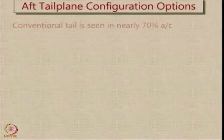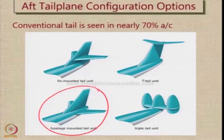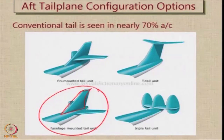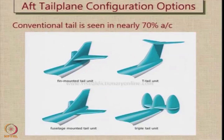Now let us see what kind of options we have. The most common configuration is called the conventional configuration. In this configuration, you have a dedicated single vertical tail of adequate size and two horizontal tails, all three attached to the rear of the fuselage. Nearly three out of four aircraft you will see would have this kind of tail configuration. But there are some variations, which normally come when this part of the fuselage is not available for mounting the tail or is being used for mounting something else more important.